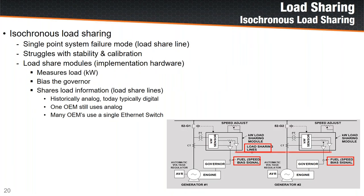Historically, this was addressed with isochronous load share modules — a concept about 40-50 years old. These devices tweak the speed reference of each governor and communicate between generators on a load share line. Historically done with analog electronics, most manufacturers have now moved to digital communication. The problem is that if you lose the load share line — whether analog or digital — the generators cannot continue to operate in isochronous mode. Some manufacturers shut the entire system down when communications are lost. We think that's a terrible choice.